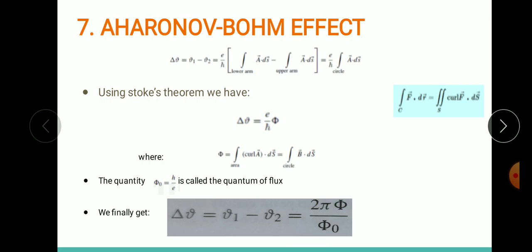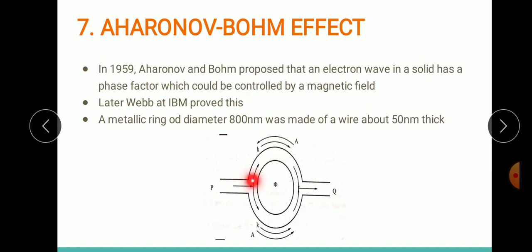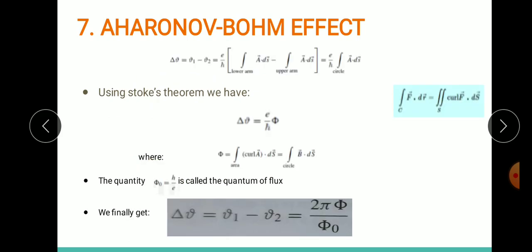This becomes (e/ℏ)∫ A·ds in the lower arm minus the upper arm, where φ₁ is the phase in the lower arm and φ₂ is the phase in the upper arm. The lower arm and upper arm together constitute a circle. So delta φ = (e/ℏ)∮ A·ds over the circle.